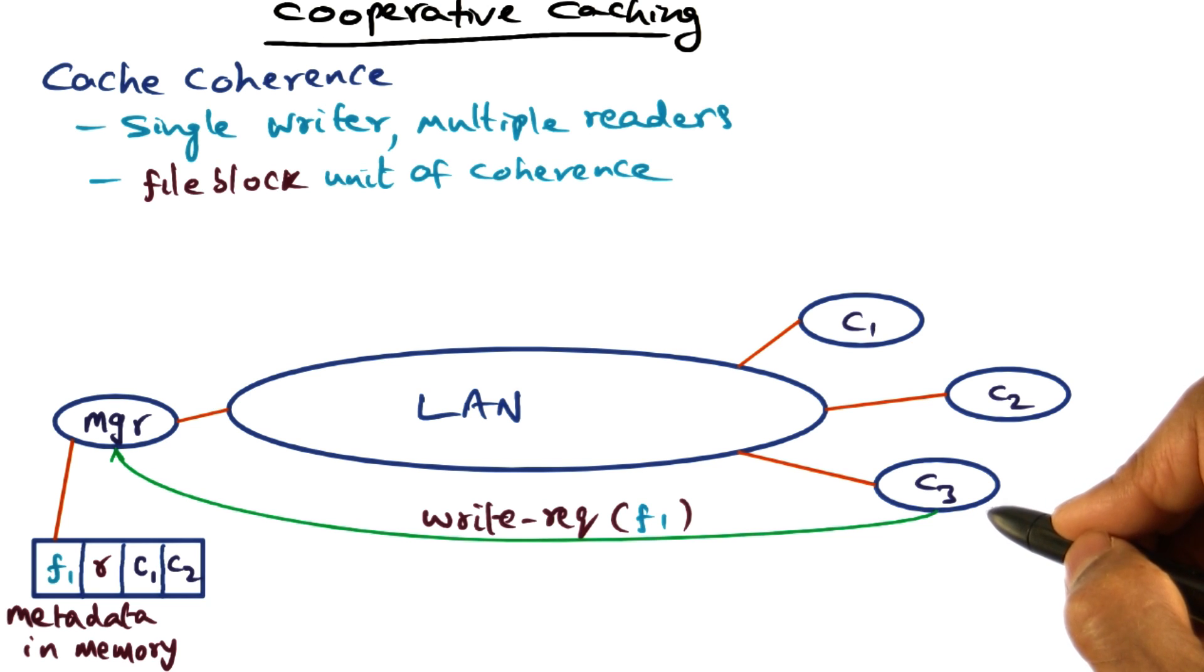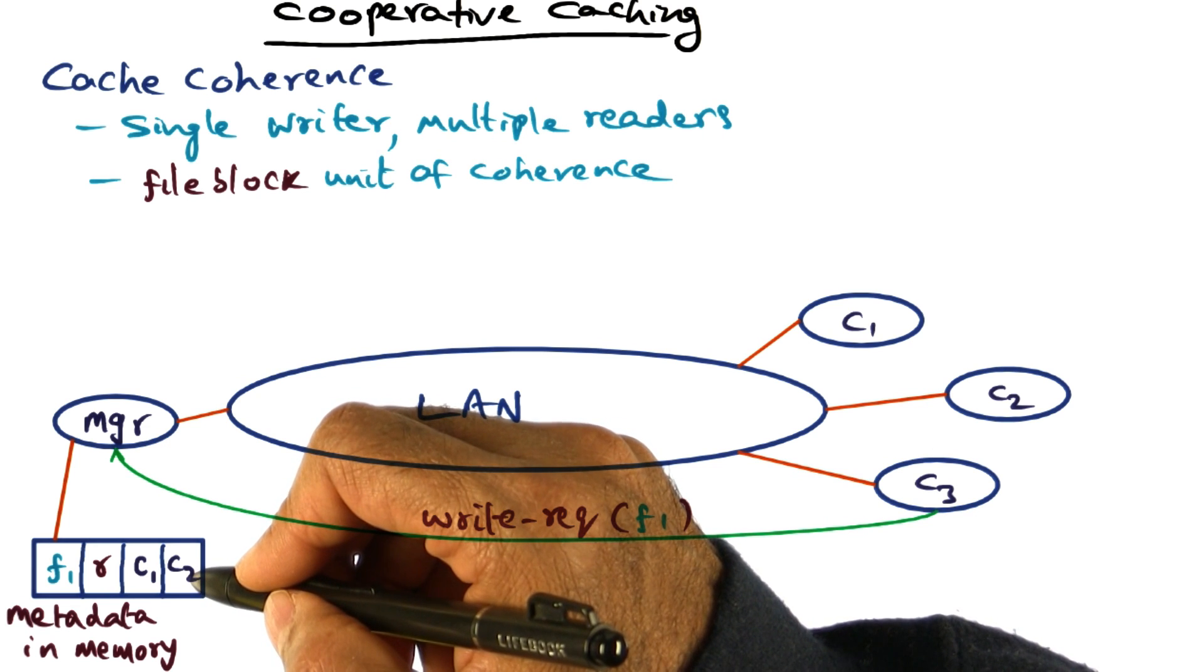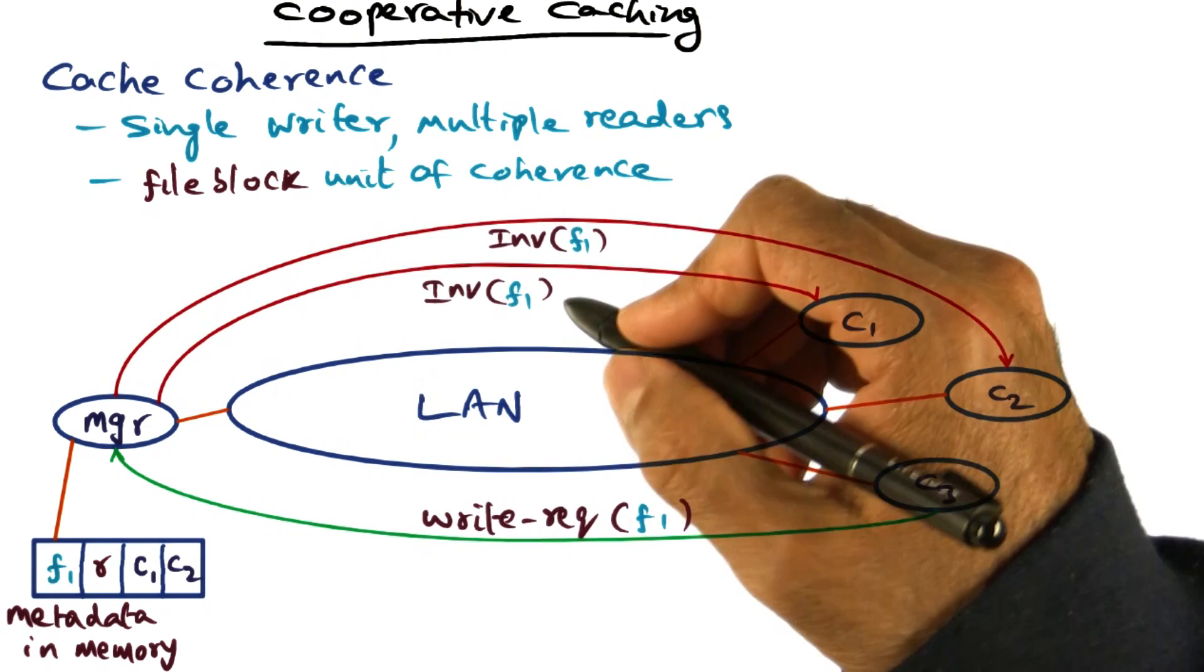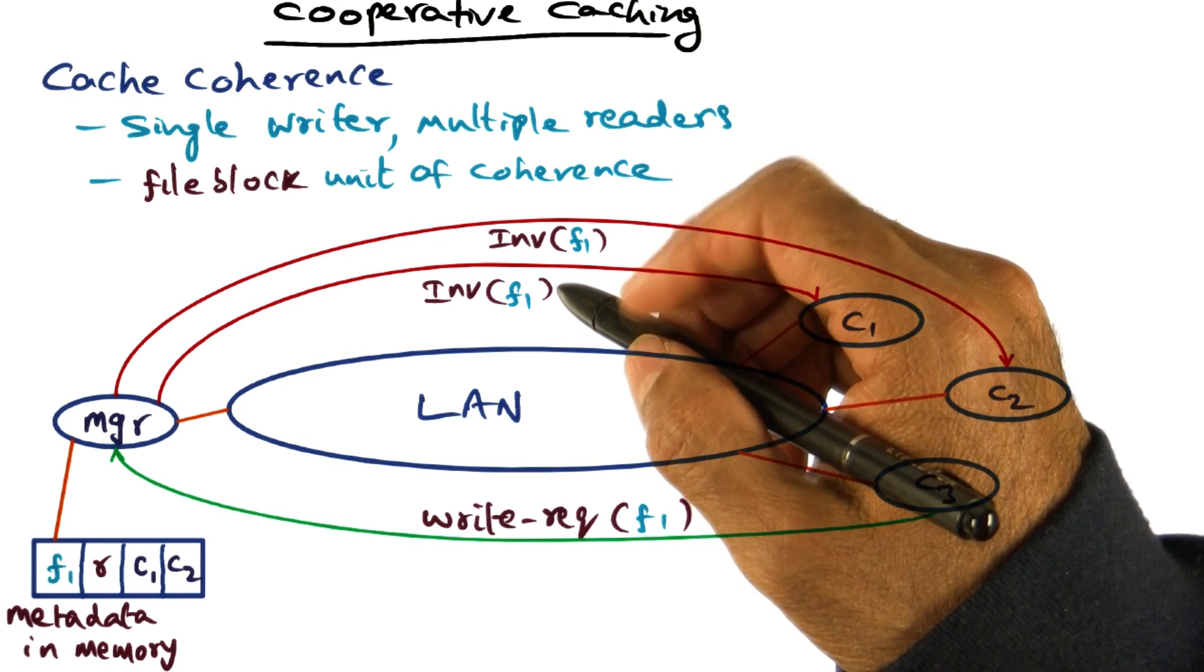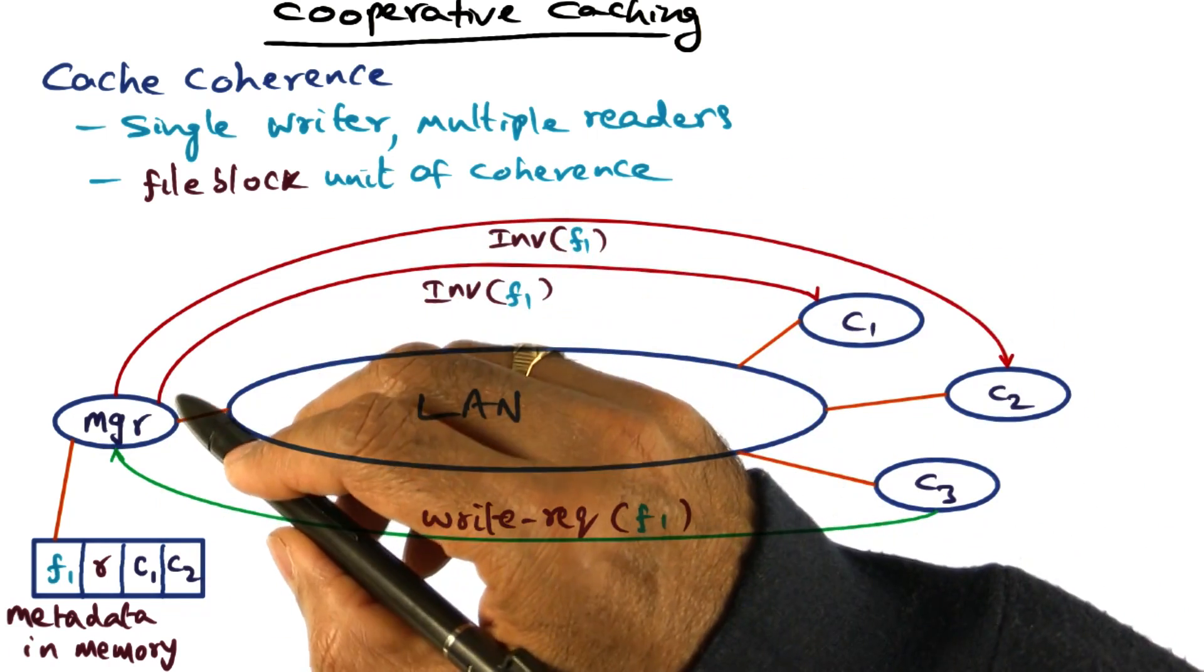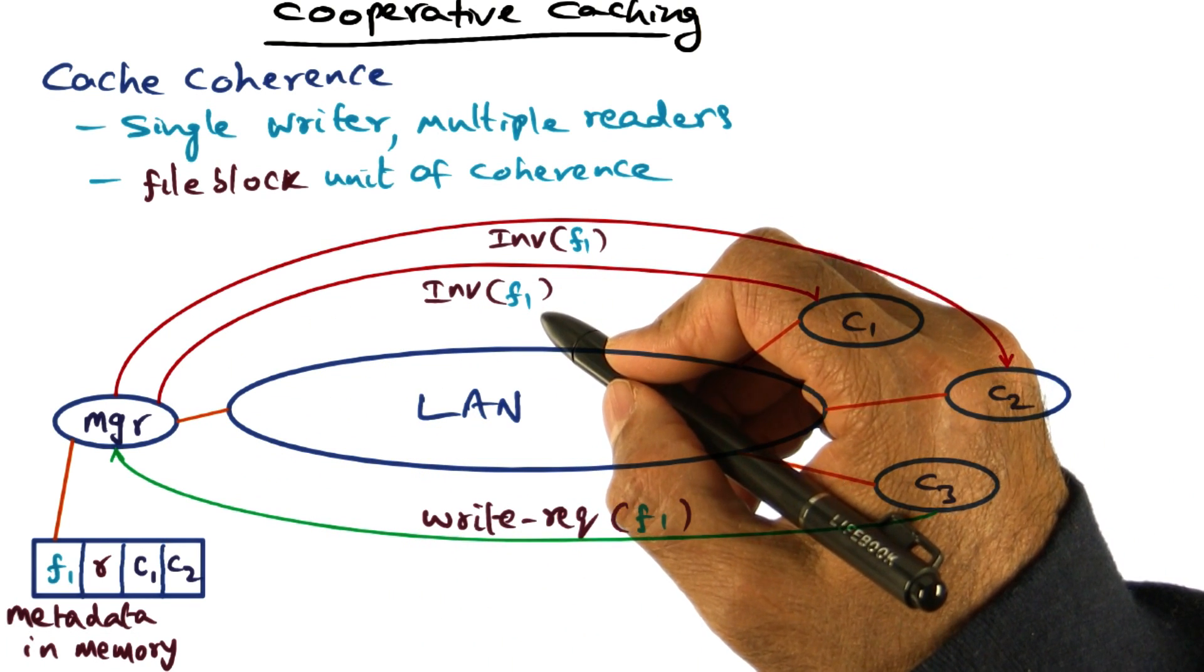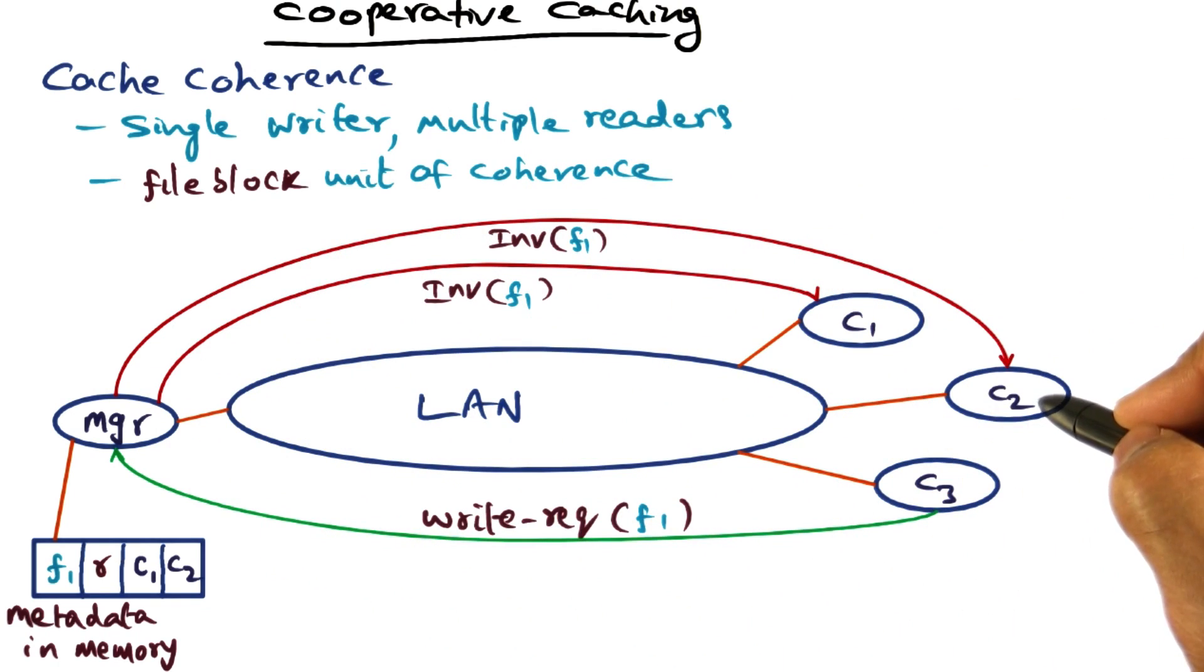So just as in the case of cache coherence in a multiprocessor, this manager is going to send an invalidation message for the file F1 to C1 and to C2.